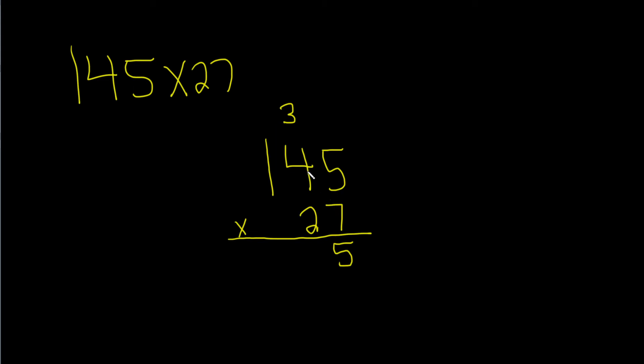7 times 4 is 28. 28 plus 3 is 31. Write down the 1, carry the 3. 7 times 1 is 7. 7 plus 3 is 10. There it is.